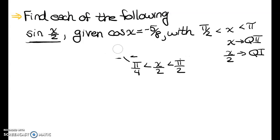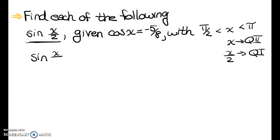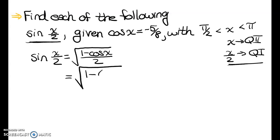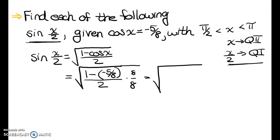Let's write the formula for finding the sine of x over 2. Since x over 2 is in quadrant 1, sine is positive, so I take the positive version: the square root of 1 minus the cosine of x, all over 2. They gave us cosine of x, so I plug in negative 5 eighths. To clear the complex fraction, I multiply numerator and denominator by 8, and I get the square root of 8 plus 5 over 16, which gives me the square root of 13 over 4.